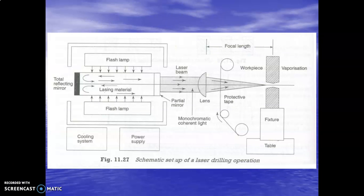You can see the full schematic diagram of the laser beam machine. Starting from the left-hand side, we have a total reflecting mirror. Here we have a flash lamp. The laser beam travels and we get the laser beam output through a partial mirror — we will discuss all components in detail. The monochromatic coherent light is then transferred to the lens. The lens concentrates all the energy at a single point. You can see the focal length — that is the distance between the lens and the work piece.